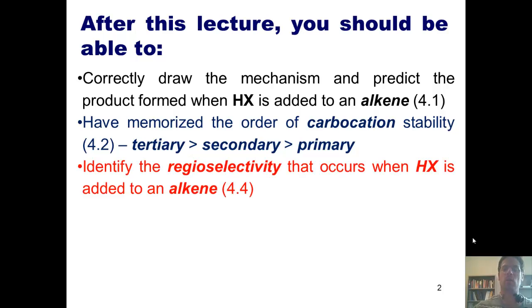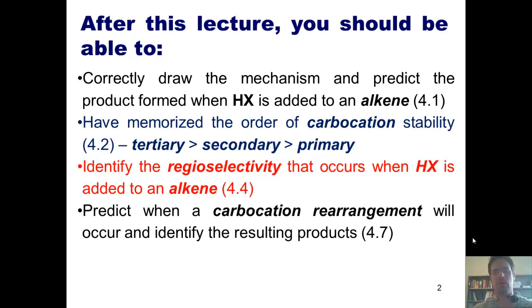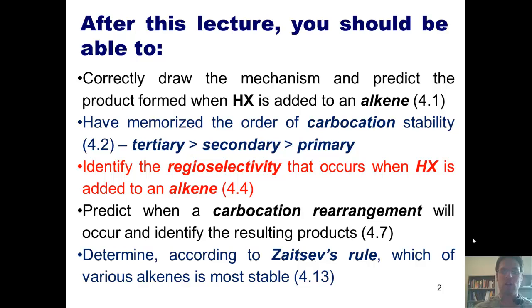You should also be able to identify the regioselectivity that occurs when HX is added to an alkene, from Section 4.4 of our text; predict when a carbocation rearrangement will occur and identify the resulting products from Section 4.7; and determine according to Zaitsev's rule which of various alkenes is most stable, from Section 4.13.